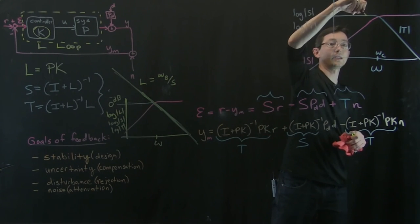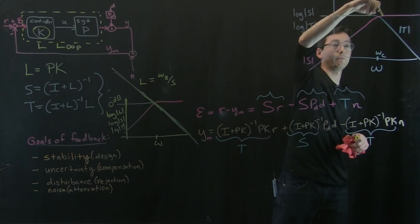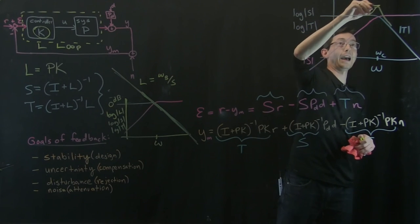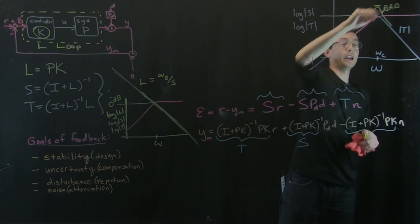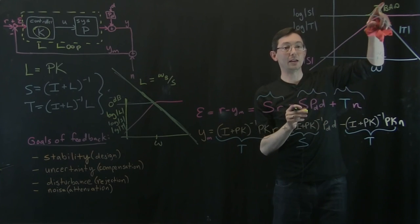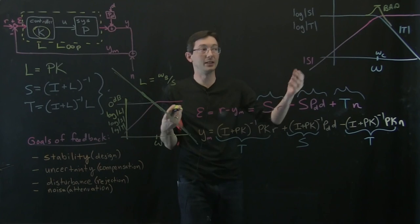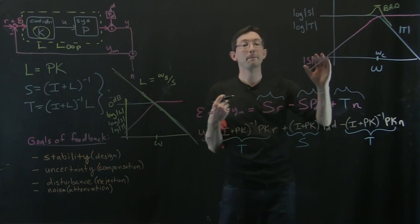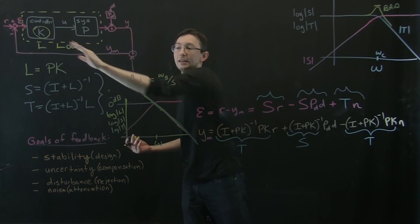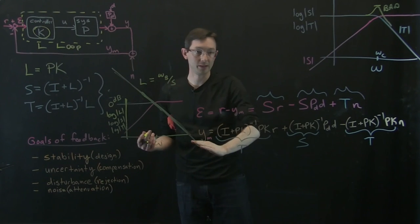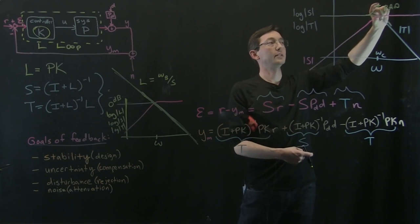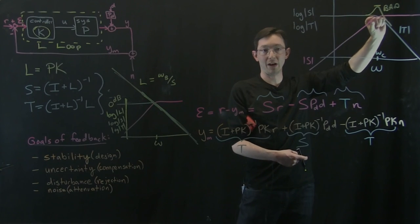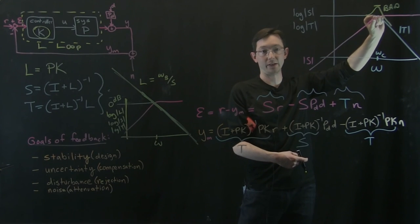So properties of this S function in particular, if my sensitivity has kind of a big bumped peak like that, this is bad. And the bigger this peak, the worse the sensitivity and the less robust my system is. So what I'm going to try to do is design my controller K to have good loop transfer function properties and also to decrease the bump, the highest peak in my sensitivity function.